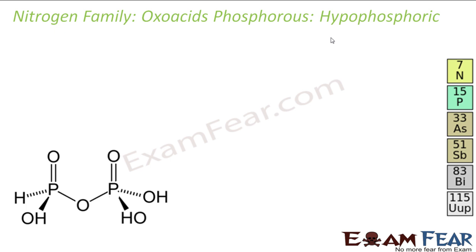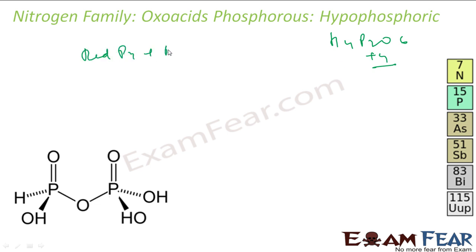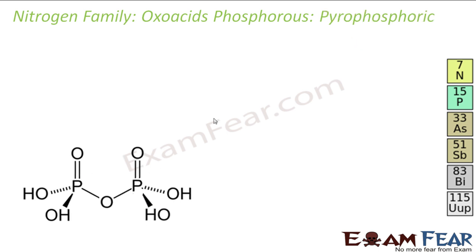The next is hypophosphoric acid, with formula H4P2O6. The oxidation number of phosphorus is +4 — calculated as (12 − 4) / 2 = +4. To prepare this, you take red phosphorus and react with an alkali. That is the structure of hypophosphoric acid.